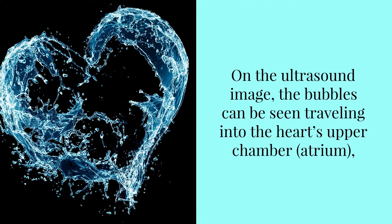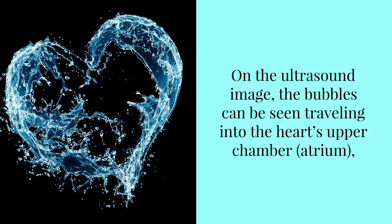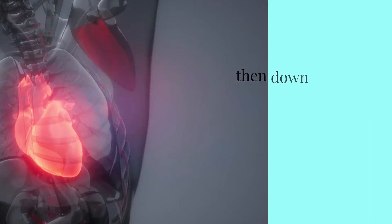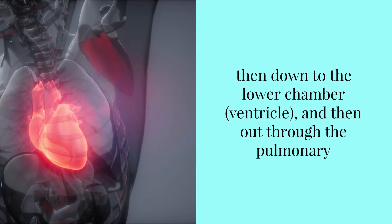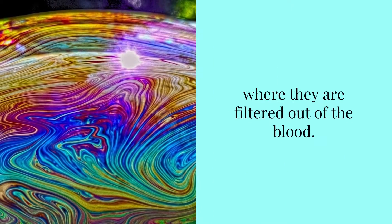On the ultrasound image, the bubbles can be seen traveling into the heart's upper chamber (atrium), then down to the lower chamber (ventricle), and then out through the pulmonary artery into the lungs, where they are filtered out of the blood.